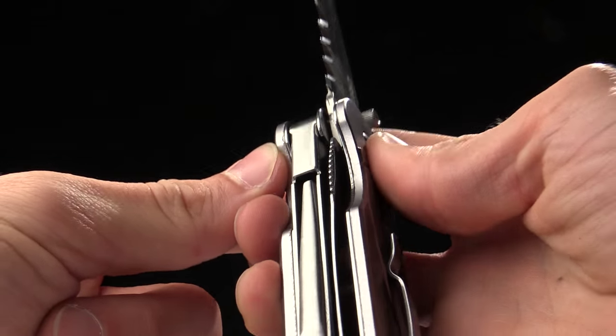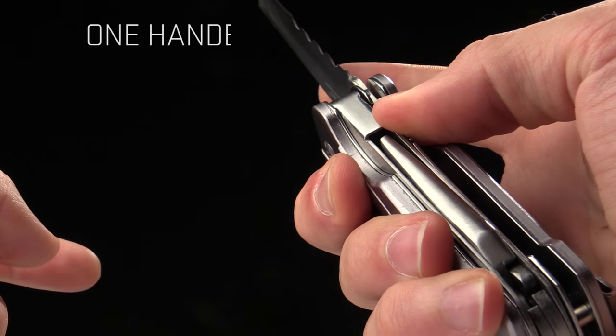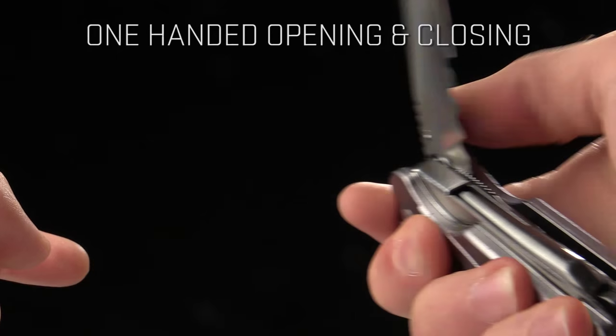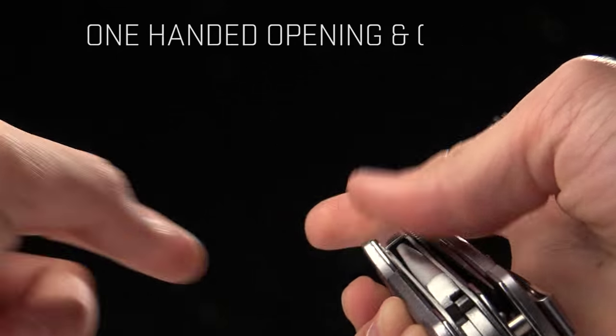To close this knife it has a locking liner right there. So just put your thumb in, push over, and close the knife. That's convenient because it's one-handed opening and closing.